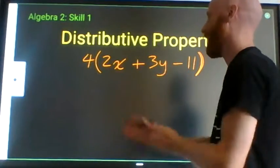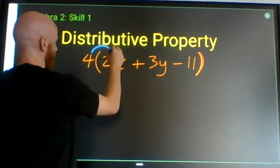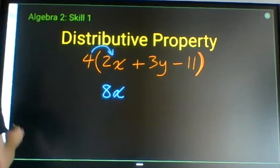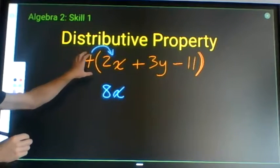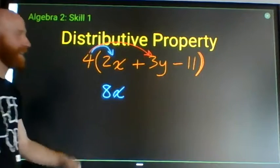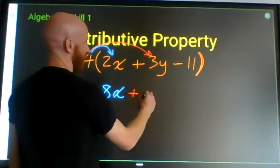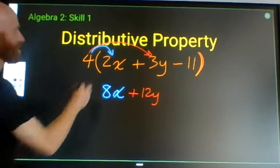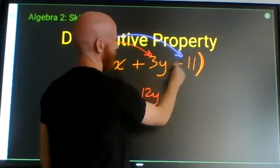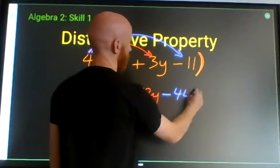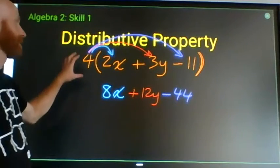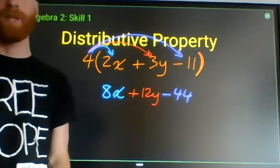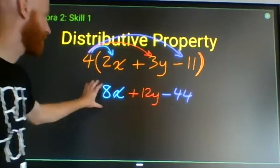In plain language: this 4 multiplies 2x, giving us 8x; the same 4 multiplies plus 3y, giving us plus 12y; and that same 4 multiplies minus 11 to give us minus 44. The distributive property means a number pressed up against the parentheses multiplies each of the terms within the parentheses.